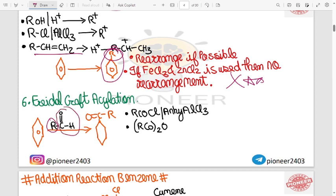In acylation you can find R group attached. You can find the acylation, the RCOCl and anhydrous AlCl3. So you can react to RCOCl and anhydrous AlCl3, or RCO2O. So you can react to Friedel-Crafts acylation.